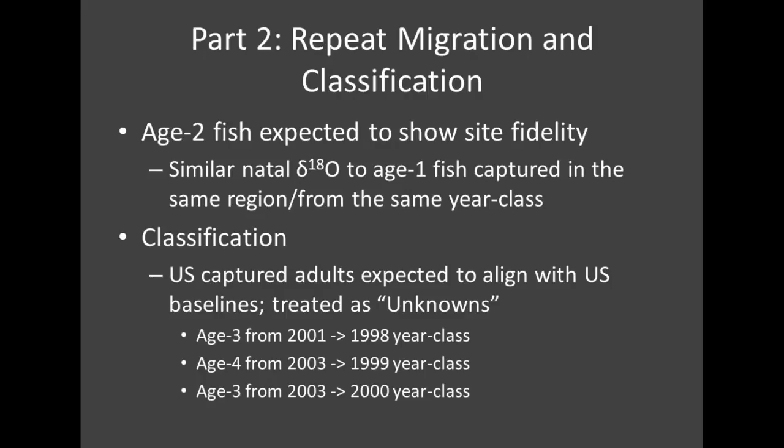Moving into Part 2, since we've confirmed there are different natal habitats we now need to show whether those habitats confer some migratory difference. We expect age-2 fish to show a level of site stability back to their natal habitat, which would manifest as the central region of that age-2 otolith having the same delta-oxygen-18 value as an age-1 fish from the same region and year class. We'll also be looking at older adults, ages 3 through 4, matching the year classes shown here. These are all captured in the United States, so they'd be expected to originate from the US, but we'll treat them as unknowns to test the value of these methods.